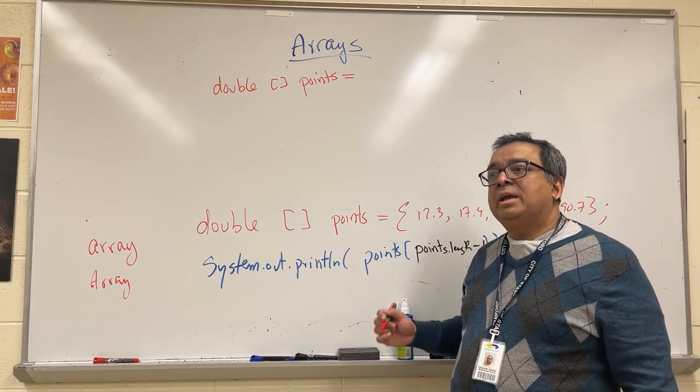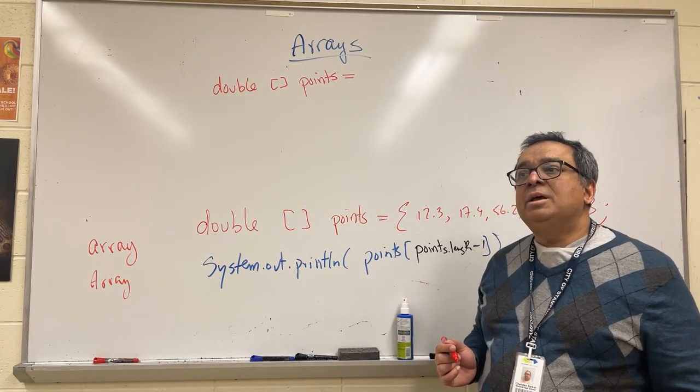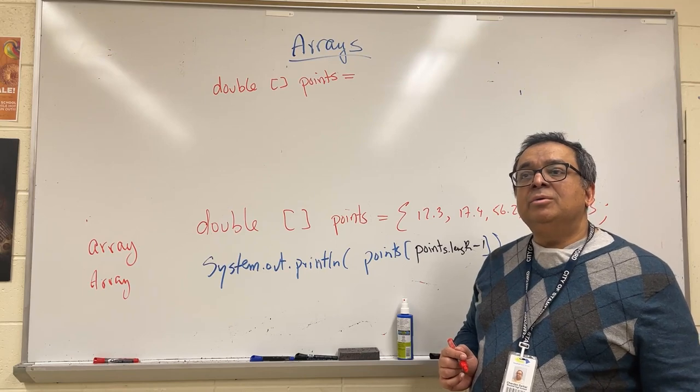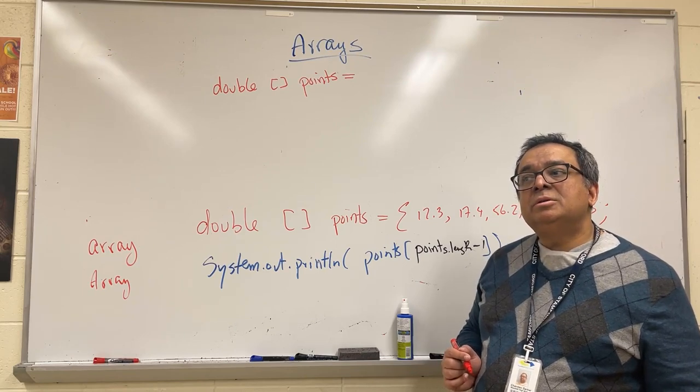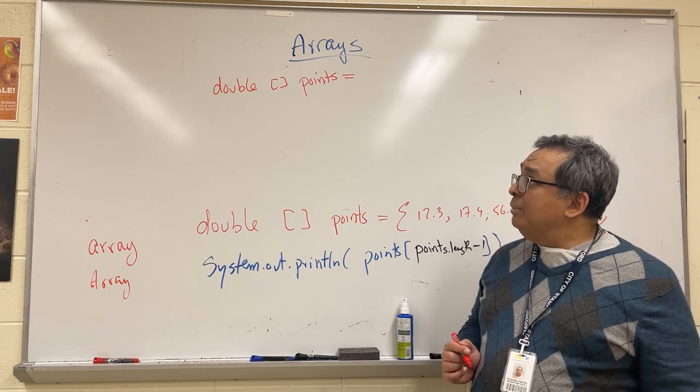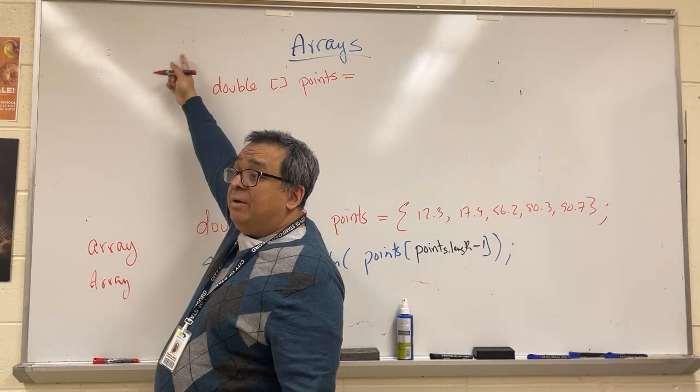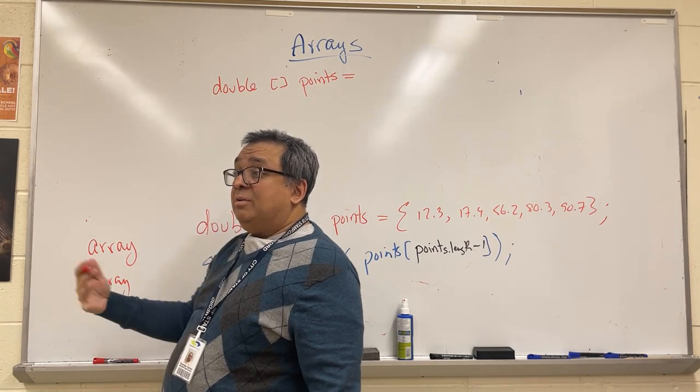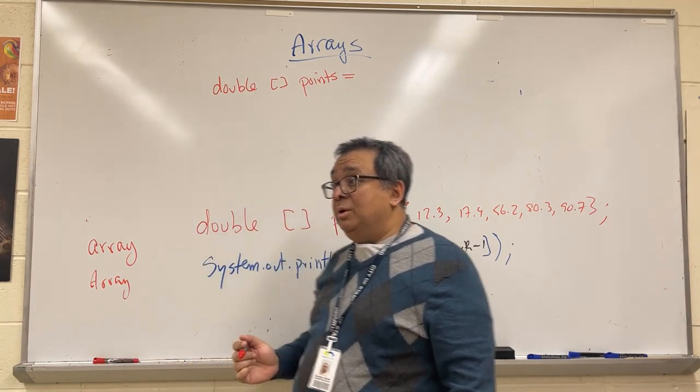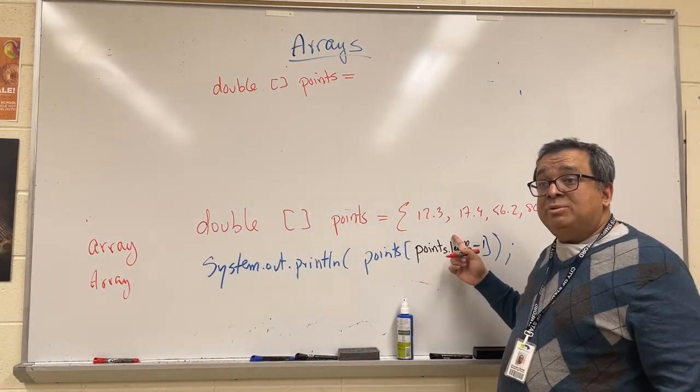What was the only other example we've seen so far this year where I can create an object of a class without using the keyword new? Who remembers? Mr. Borden, it was a string. Remember up here I had string s equals something? That was another example of a case where I can create an object without using the keyword new. So here is your second exception to the rule.